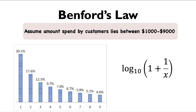Let's look at Benford's Law. If we assume that the amount spent by customers lies between $1,000 to $9,000, we can calculate the percentage using the equation shown on screen. For example, for the percentage of people spending $2,000 to $2,999, we substitute x equals 2 into the equation. On the left-hand side, we can see the percentage for each different discount tier.